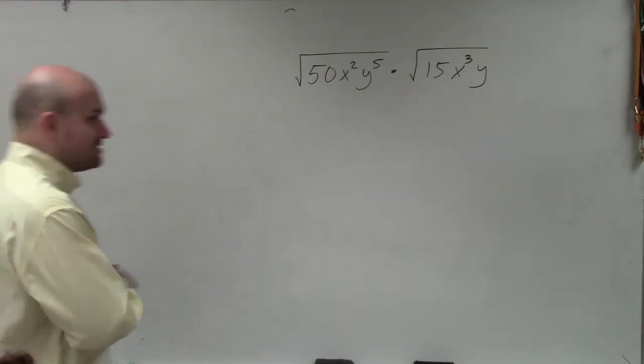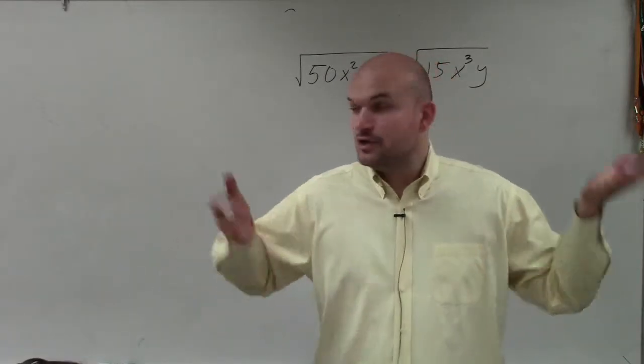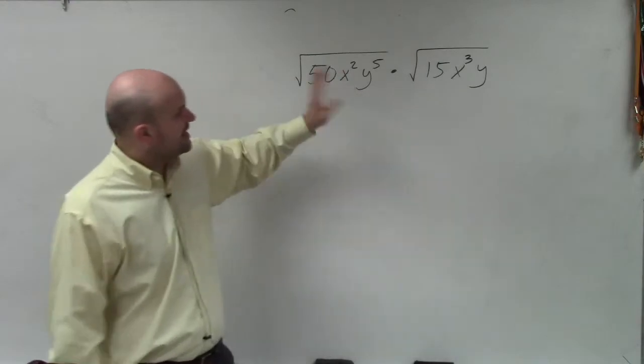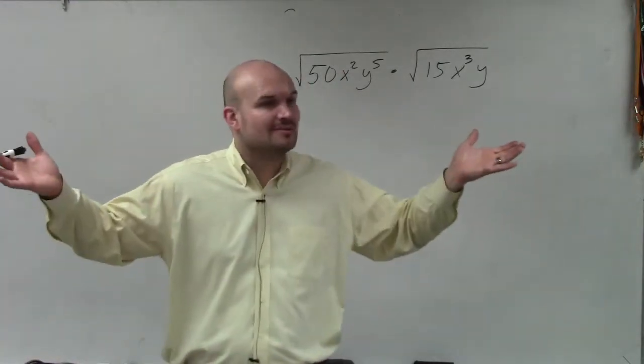Now, ladies and gentlemen, again on the product, a lot of times, as I mentioned, just like with the quotient, you could easily rewrite this. You could easily multiply 50 times 15, x squared times x cubed, y to the fifth times y, and then go ahead and simplify from there.